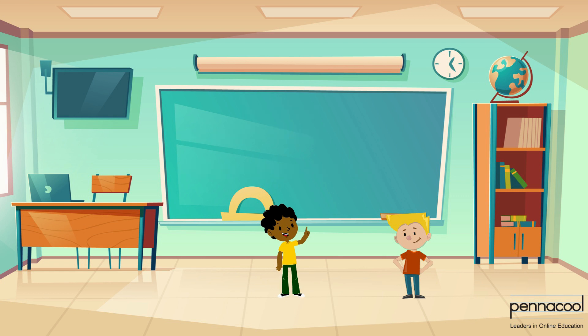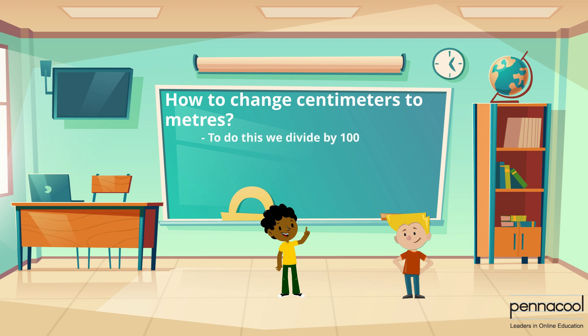Zion asks one more question. He asks how to change centimeters to meters. Elijah then explains: since we multiply meters by 100 to convert to centimeters, if we want to do the opposite — meaning changing centimeters to meters — we must divide by 100. For example, changing 900 centimeters to meters, we divide 900 by 100. This gives us 9 meters.